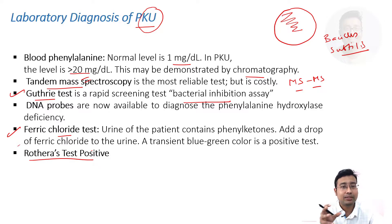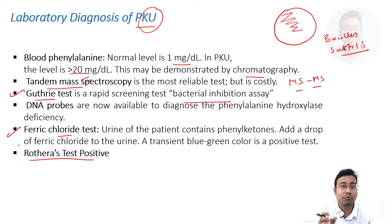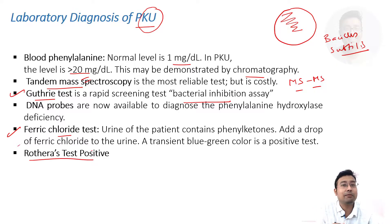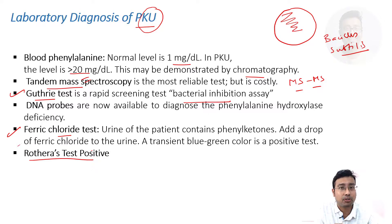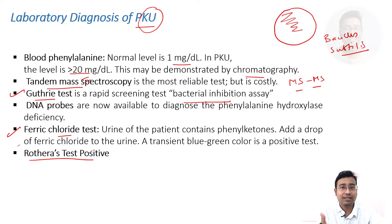Whenever Rothera's test is positive, examiners tend to ask about ketone bodies. But an examiner might specifically ask: name a disorder of protein or amino acid metabolism in which Rothera's test is positive. Remember, the answer is phenylketonuria. If you answer this, questions can go deeper into amino acid metabolism.